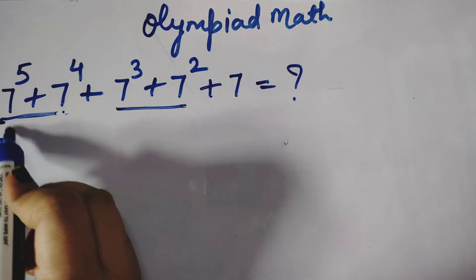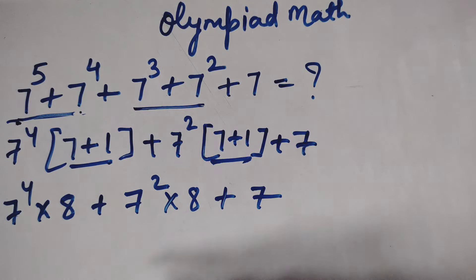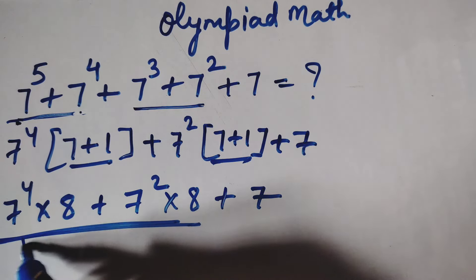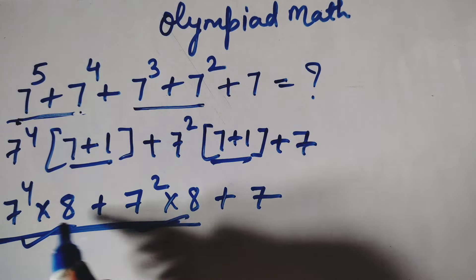Now see here, which is common: 7 squared is common. So inside is 7 plus 1 plus 7. After that, 7 raised to the power 4 stays as it is, and this becomes 8. Since there's no sign, we use the multiply sign. 7 squared also gives 8 plus 7.